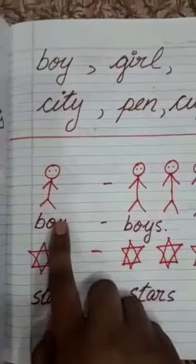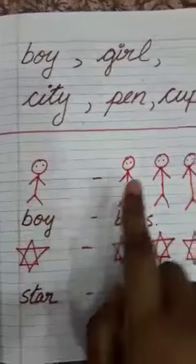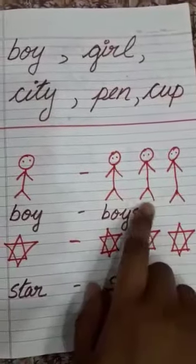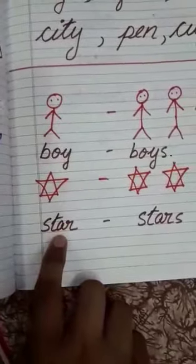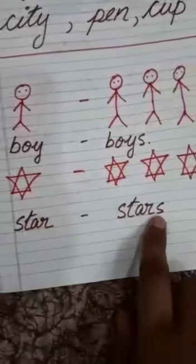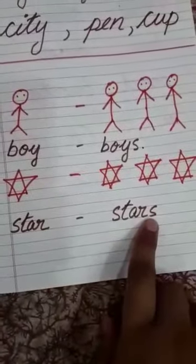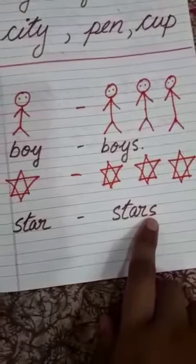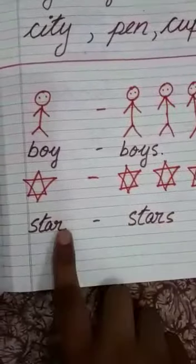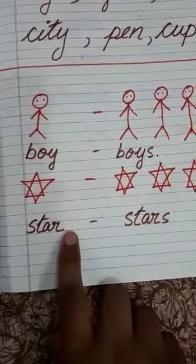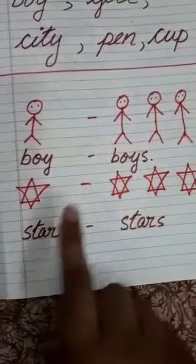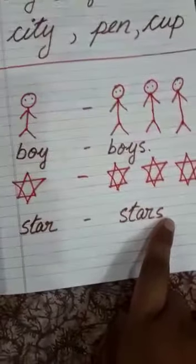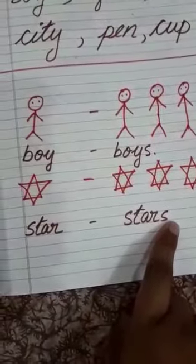Here one boy and here more than one, so we use boys. Here one star and here more than one, so we use stars — that you already know. If it is one, it is singular. And if it is more than one, we can say it is plural.